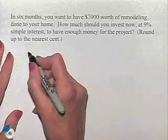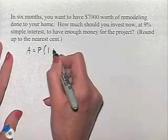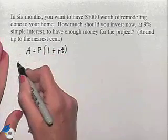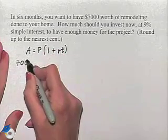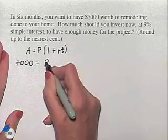We're going to use the formula A equals P times 1 plus RT as we're working with simple interest. We want to end up with $7,000 in the future. We're trying to determine how much we need to invest right now. So P is going to be our unknown.